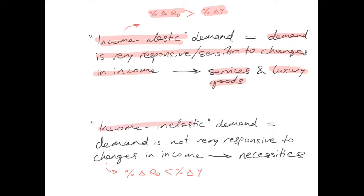Income inelastic demand occurs when the percentage change in quantity demanded is less than the percentage change in income. Demand is not very responsive to changes in income. This occurs in the case of necessities. Necessities are not very responsive to changes in income. You can't really imagine someone getting a big bonus at work and going out there and stocking up on necessities, especially if all of their basic needs are met.